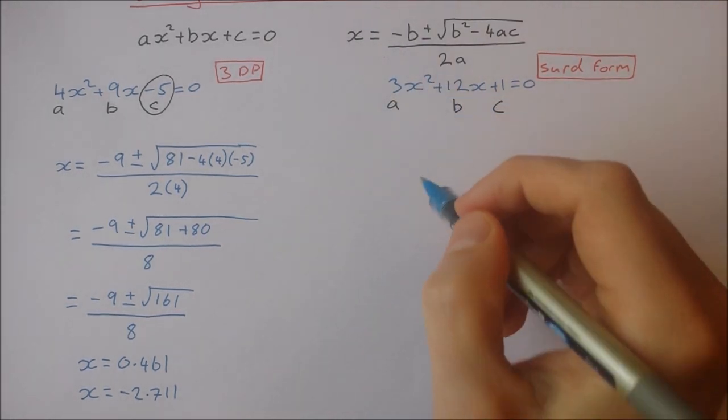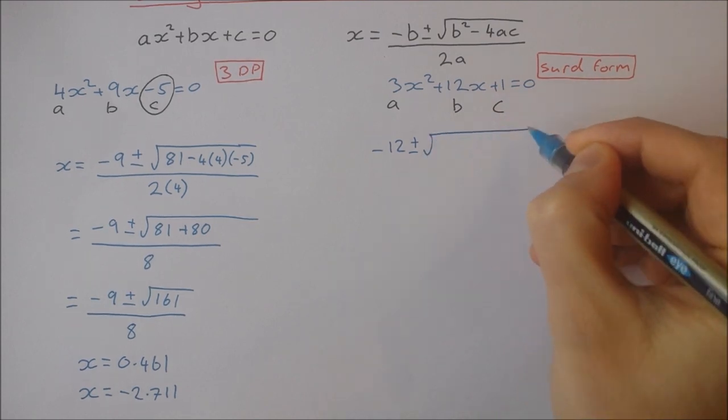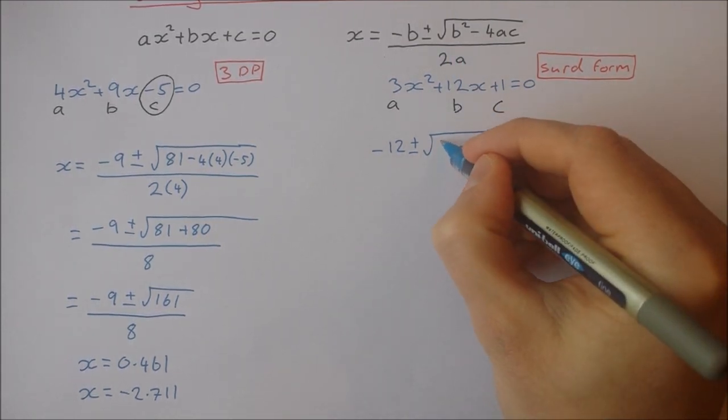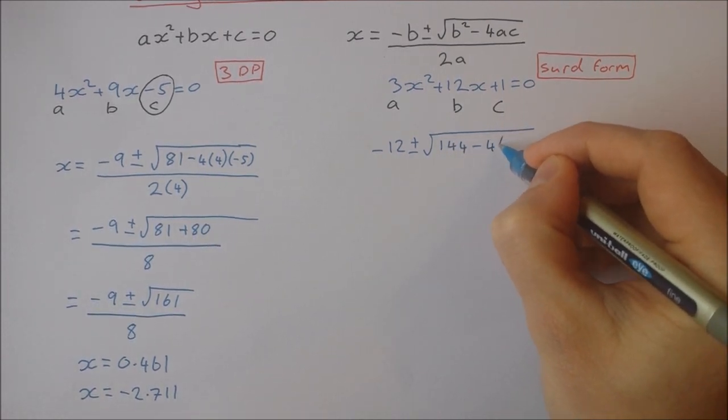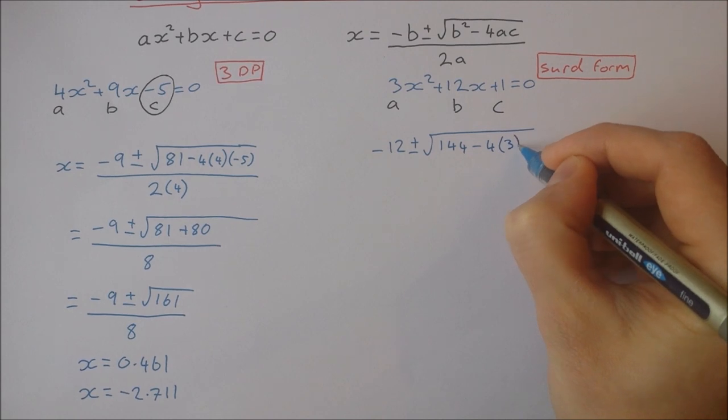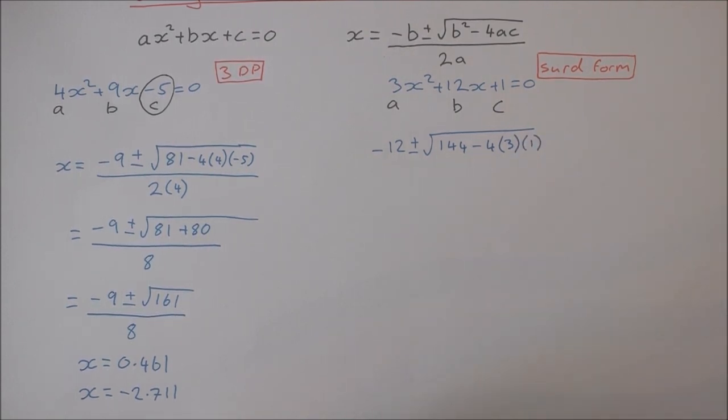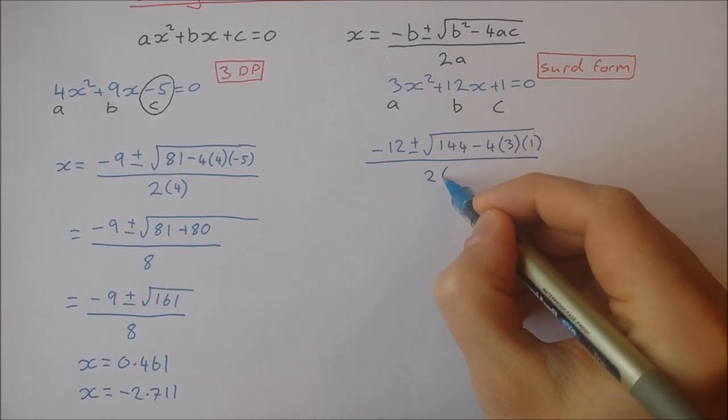So minus b, that's minus 12, plus and minus the square root of b squared. Okay, b squared is 12 squared, which is 144. Minus 4 times a, which is 3, times c, which is 1. And this is all over 2a, so that's 2 times 3.